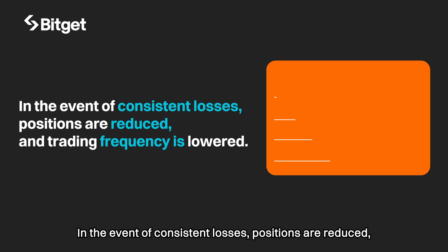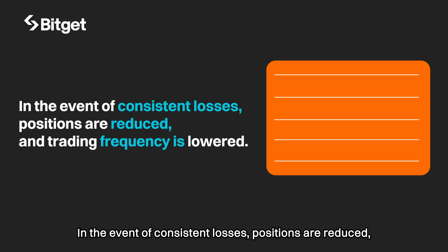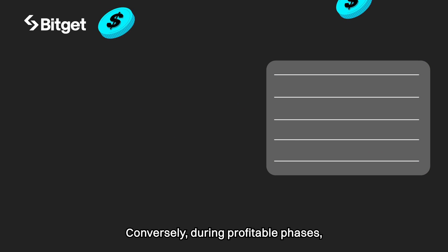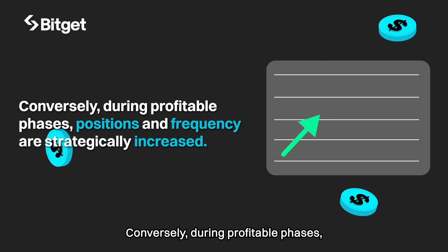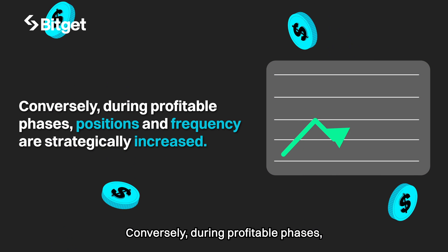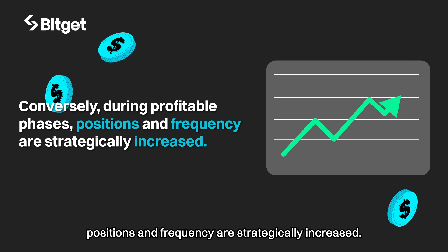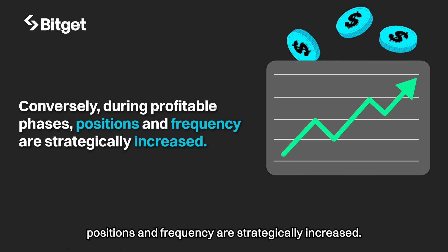In the event of consistent losses, positions are reduced and trading frequency is lowered. Conversely, during profitable phases, positions and frequency are strategically increased.